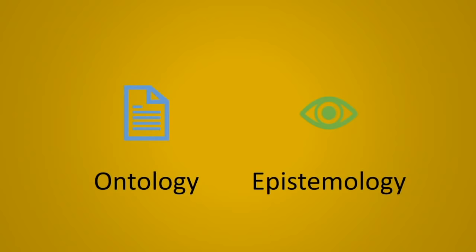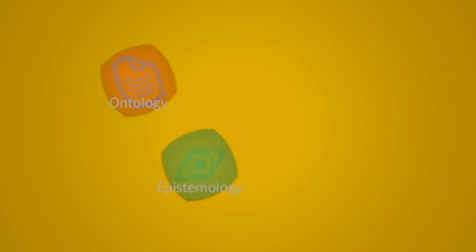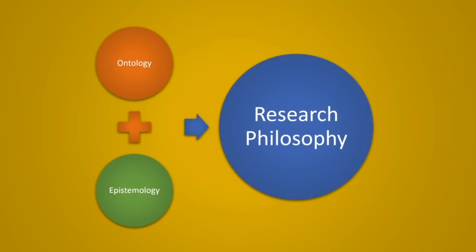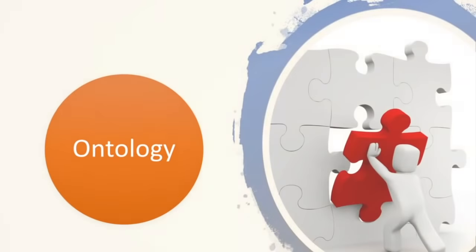We will look at the terminologies used in understanding research philosophies. These are ontology and epistemology. Before explaining each concept, we should understand that ontology and epistemology shape your research philosophy. The research philosophy is mainly dependent on these two components, so it is important for us to understand each of them. Let us start with understanding ontology.